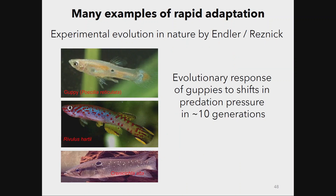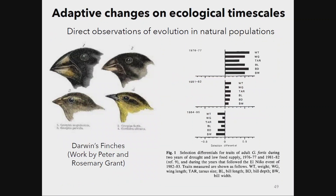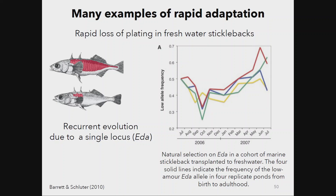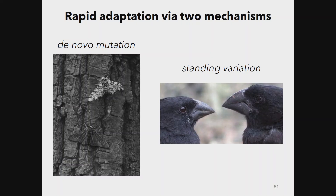We also talked about examples of rapid adaptation. Twenty to forty years ago, people didn't have many examples and thought things would take a long time to evolve. But people gradually realized adaptation can happen very fast — not only in laboratory artificial selection, but even in natural populations. We discussed Darwin's finches, stickleback fish, and the peppered moth in the UK.